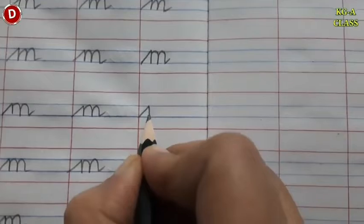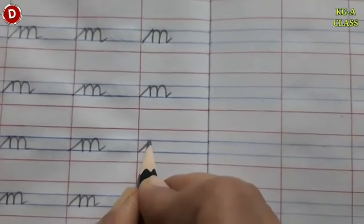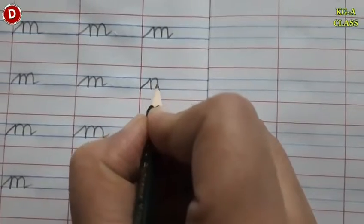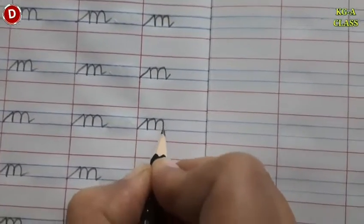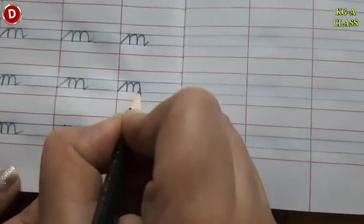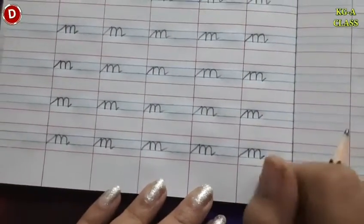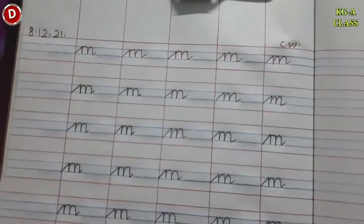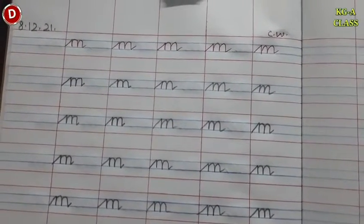I am writing in the last line — see how I am writing. Watch it carefully. Slowly, evenly, you have to write cursive M between two blue lines. So, the last block is also filled. Write, children, one page of cursive M like this, along with the date, and send its picture to me.